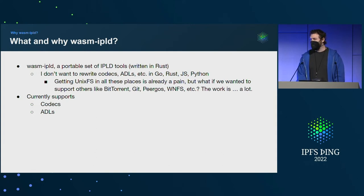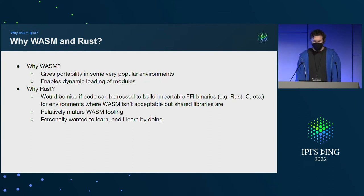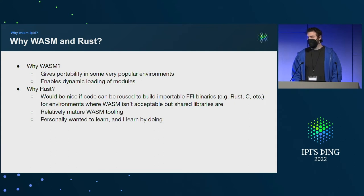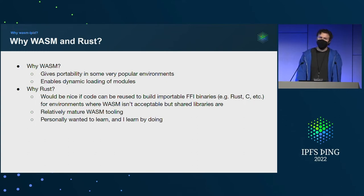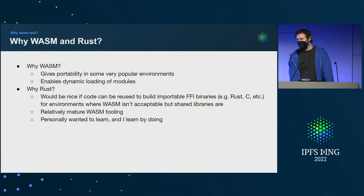Currently it supports working with codecs and ADLs — that's the subset of IPLD tooling it works on. Why WebAssembly? Portability in a lot of popular environments — not everywhere, but many places — and dynamic loading of modules. Rust is nice because FFI is another interoperability tool that gives compatibility across many programming languages. It has mature WebAssembly tooling, and colleagues keep telling me Rust is better than sliced bread, so I figure I should learn by doing.